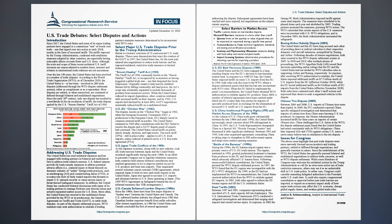U.S.-Japan trade conflicts of the 1980s: As the Japanese economy, along with its auto industry, took off, trade tensions between Japan and the United States escalated significantly during the early 1980s. In an effort to persuade Congress not to legislate retaliatory measures, both countries held intense bilateral consultations and reached agreements to improve market access for U.S. products and limit auto imports. They negotiated several Voluntary Export Restraint agreements, which required Japan to limit its auto and steel exports to the United States. Japan also agreed to increase U.S. imports and eliminate barriers to U.S. firms operating in Japan. The 1995 WTO Agreement on Safeguards banned the use of informal measures like VER arrangements.